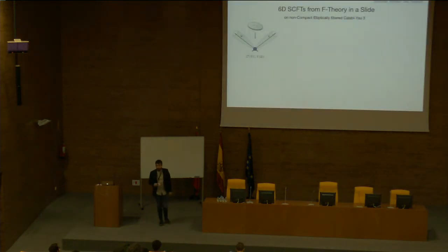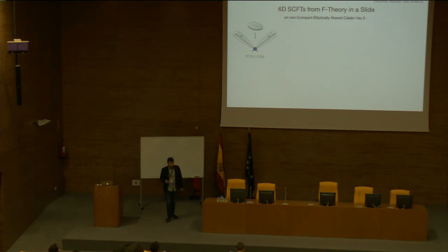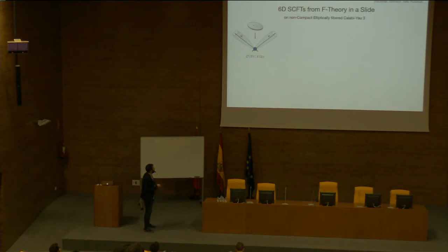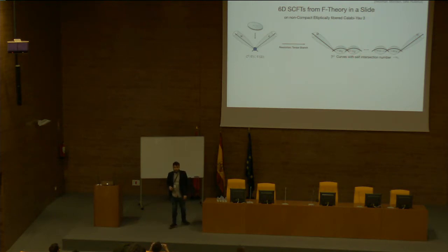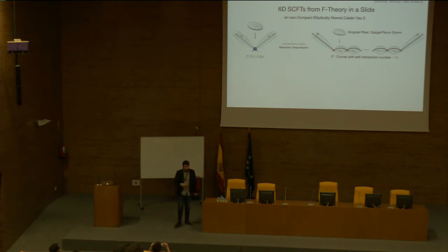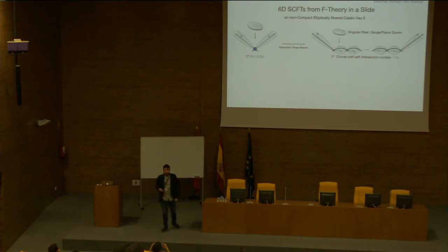Let me review 6D CFTs from F-theory. We compactify F-theory on a non-compact Calabi-Yau threefold which is elliptically fibered. You have a singular base which is C² mod Γ, where Γ is a subgroup of U(2), and you have an elliptic fiber. To understand the theory at an effective level, you move to the tensor branch, resolving the singularity, which introduces a collection of ℙ¹s with their self-intersection numbers. The singularity of the elliptic fiber on each curve detects your gauge or flavor symmetry.